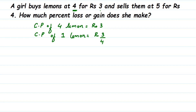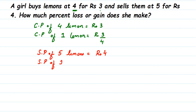Similarly, we find the selling price. The selling price of 5 lemons is equal to rupees 4. Therefore, the selling price of one lemon is equal to rupees 4 divided by 5, which is 4/5.